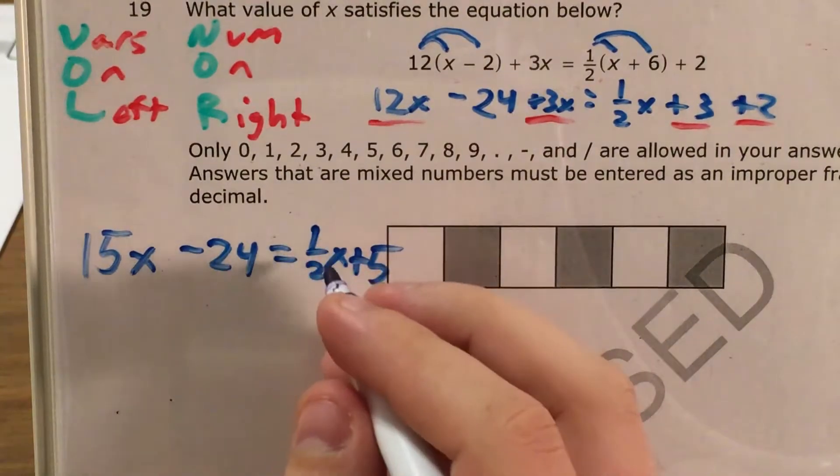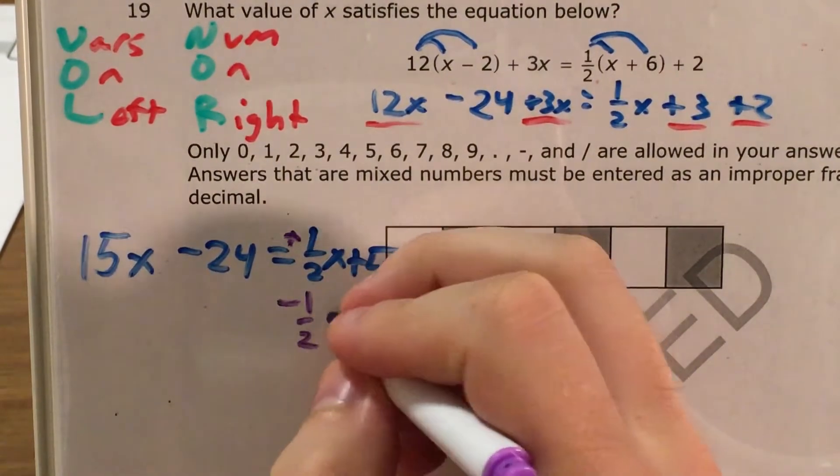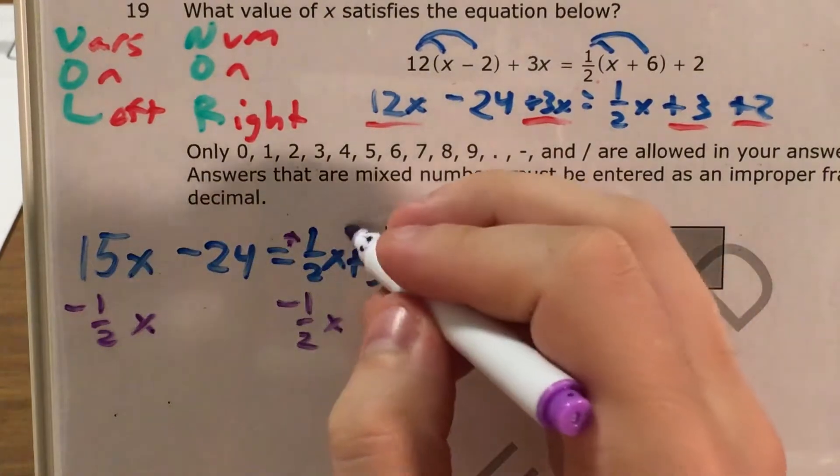So I look at what's going on here, I want to get my variables on the left and I see 1 half x here on the right side. I don't like that it's on the right side, so I'm gonna remind myself that it's positive 1 half x and subtract 1 half x. Positive 1 half x and then negative or minus 1 half x are gonna cancel each other out.